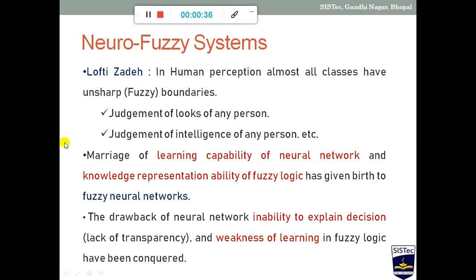As per Lotfi Zadeh, the inventor of the fuzzy system, almost all classes have unsharpen boundaries — similar to human perception. To prove this, consider two questions: if asked how a particular person looks, someone might say 'he looks good' or 'nice,' but there are no exact sharp boundaries to decide that. Similarly, if asked 'how intelligent are you,' there are no sharp or exact boundaries to give a precise answer.